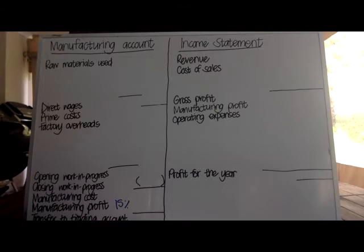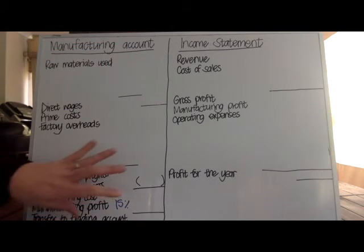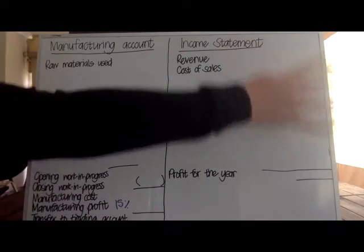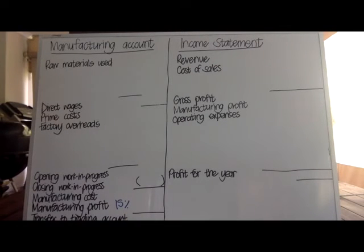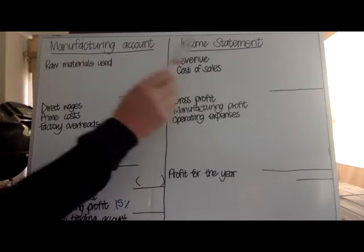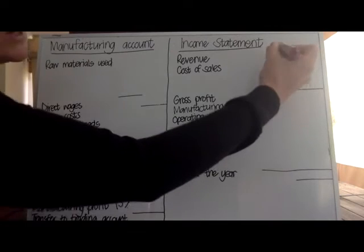The trial balance showed revenue for the period as 1845. The first thing we need to do is decide: is it a cost of manufacturing the product, or is it something that's going to be on the income statement? Revenue is obviously all your sales, so we're going to put it on the income statement — 1845.